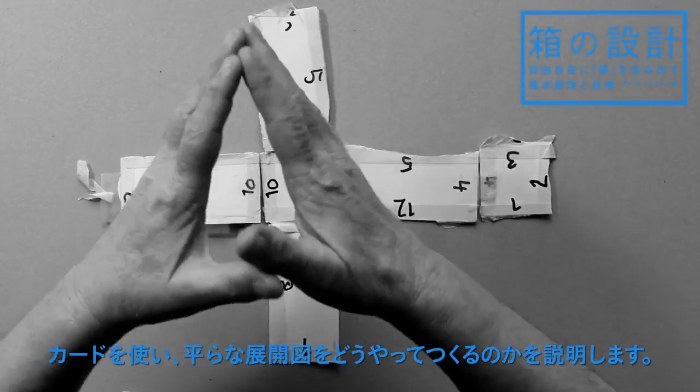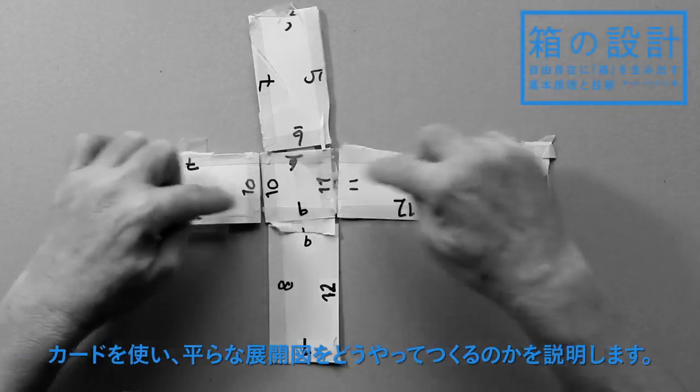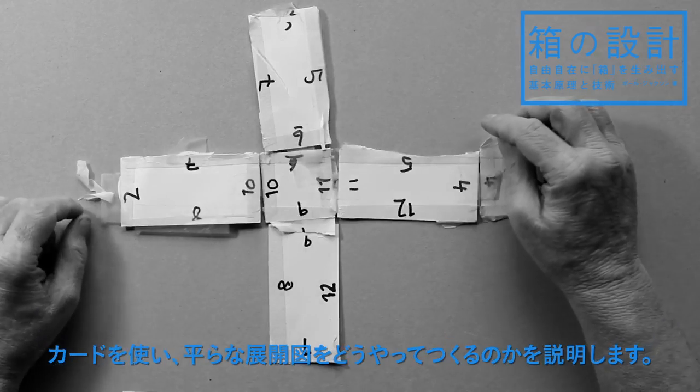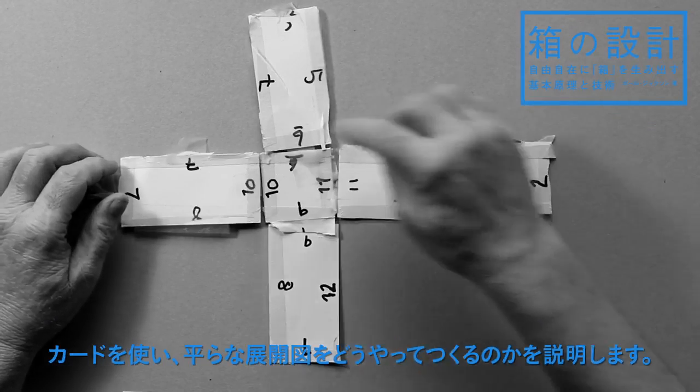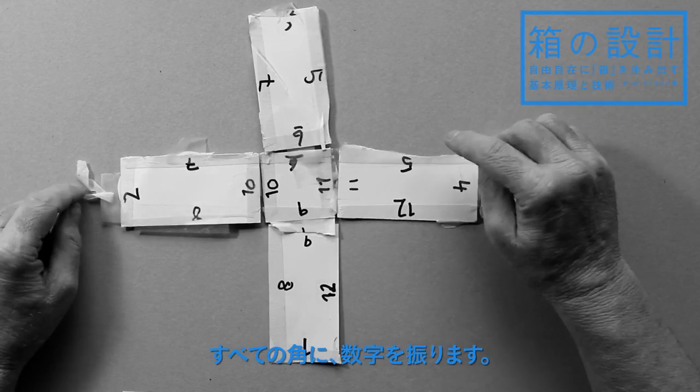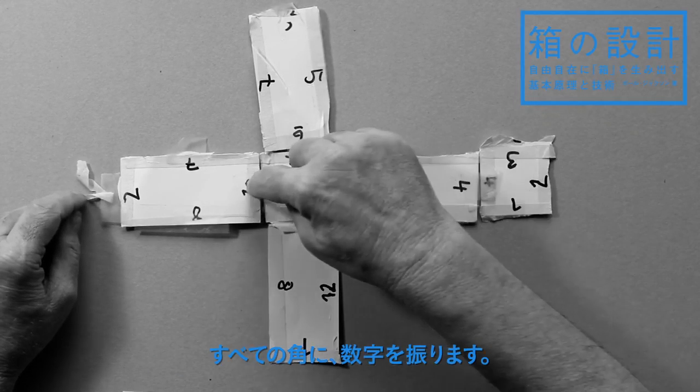In the book it explains how you can cut a flat net from a basic brick that you make here from separate pieces of card so that you put numbers across all the edges like 11 and 11 and 10 and 10.